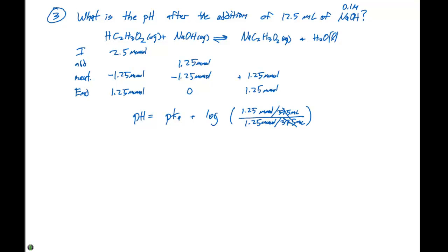So, again, the volumes cancel out, and the pH is actually at this point going to be equal to the pKa. And remember, the Ka is 1.8 times 10 to the minus 5, and the pKa is then going to be 4.74.